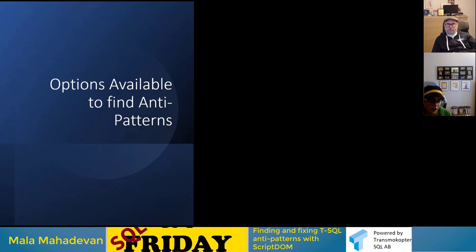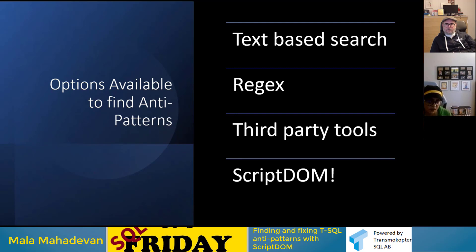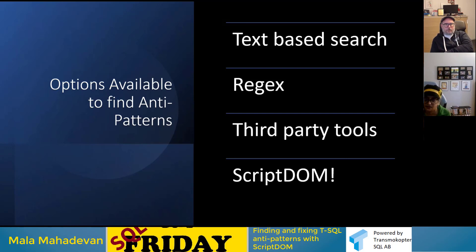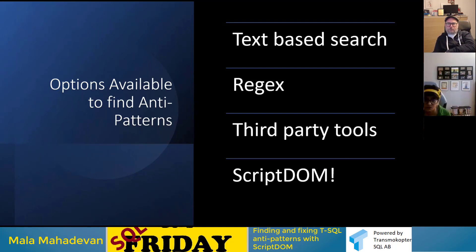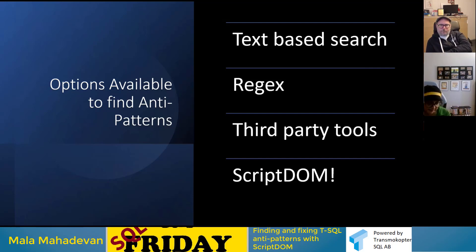What are the options to find anti-patterns today? We can use a text-based search — a lot of places use this where they don't think a linting or code smell tool is necessary. We can use regex if you have people smart enough to write regex patterns. There are also a huge number of third-party tools, many open source, that you can find on GitHub or elsewhere to do the same thing.